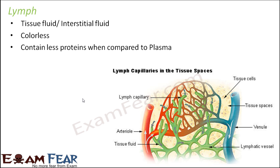In simple terms, you can understand it this way: when blood flows through extremely thin capillary tubes — the different tube-like structures we call blood vessels inside our body — sometimes it happens that some part of the blood leaks out of those vessels. Now the fluid which leaks out is basically the plasma, because the RBCs generally do not leak out.